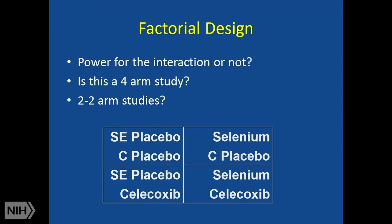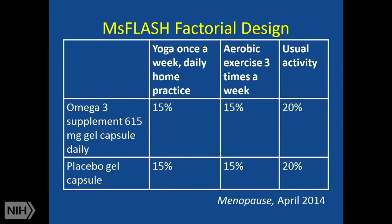So you've got to make a decision: two two-arm studies or a four-arm study. The Ms. FLASH study also used a factorial design. They weren't even comparing yoga to aerobic exercise — they were comparing aerobic exercise to usual activity, and yoga to usual activity, not all three arms against each other. They used unequal randomization between the study groups in order to achieve the statistical power they needed.